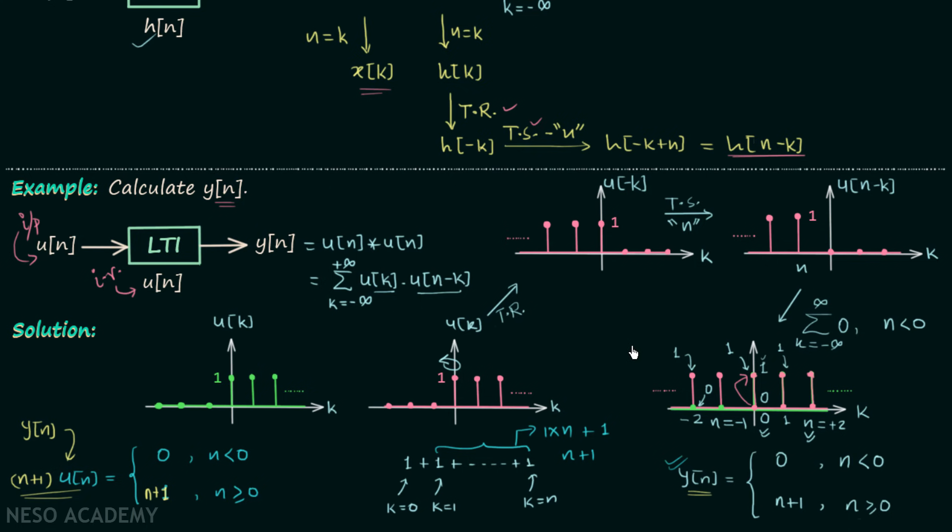So this is all for this lecture. In the next lecture we will understand one simple method known as the tabular method to calculate the discrete time convolution.